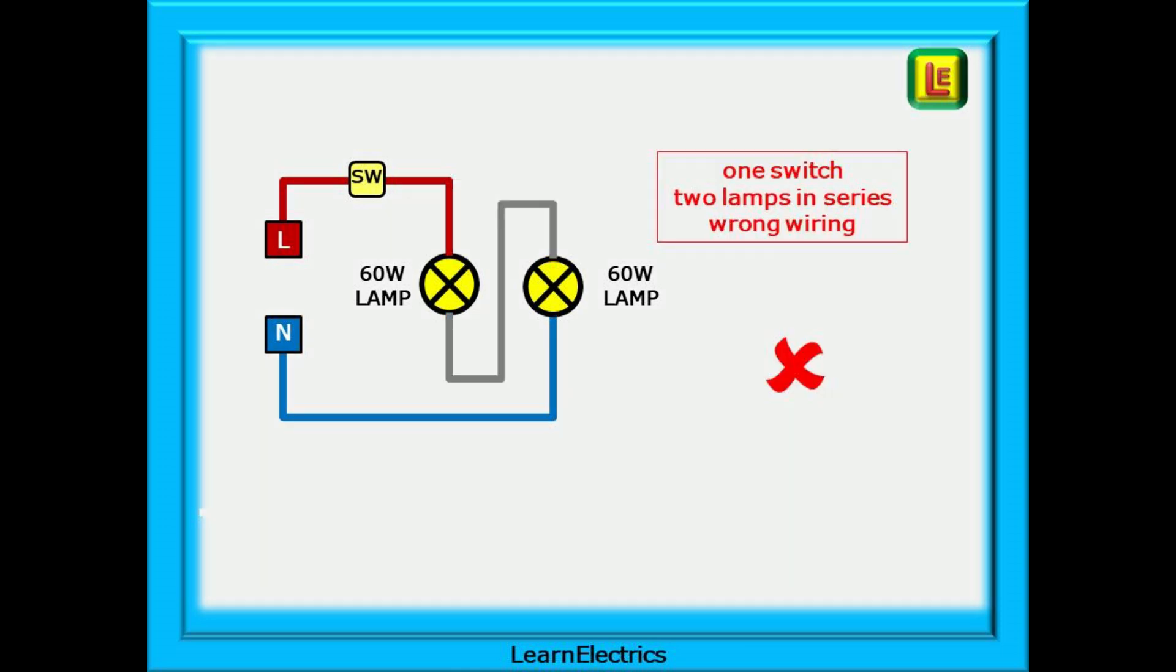Now look at this series circuit. One lamp is connected to the line input but not the neutral. The second lamp is connected to the neutral output but not the line. This is not correct and will cause problems, as we shall see.